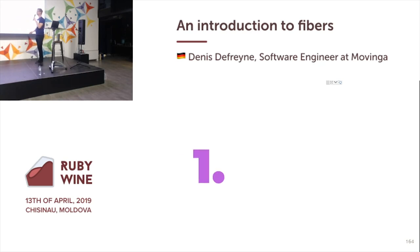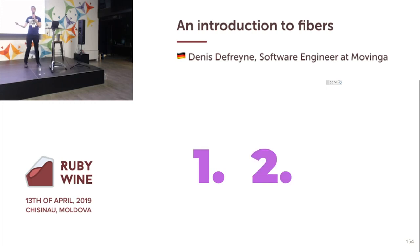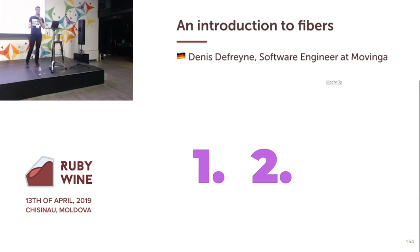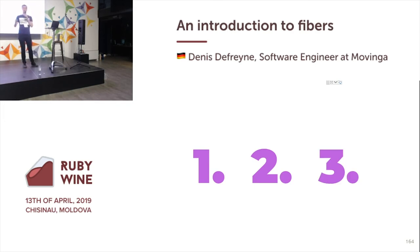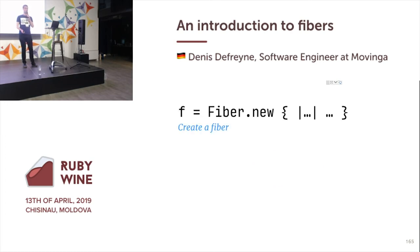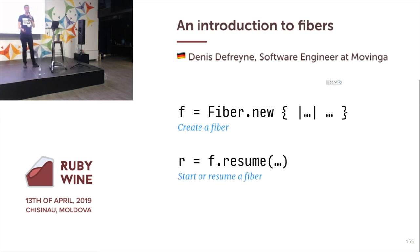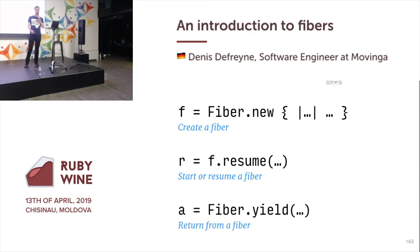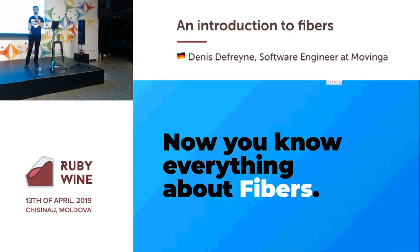To recap, I gave three examples. The first was generators, where you can dynamically calculate potentially infinite lists. Number two was resumable computation, where I replaced an exception with something wrapped in a fiber so I could continue the computation later. And lastly, efficient single-threaded non-blocking I/O. You can create a Fiber with Fiber.new, resume a Fiber with the resume method, use Fiber.yield to suspend or return — and now you know everything about fibers. Thank you.